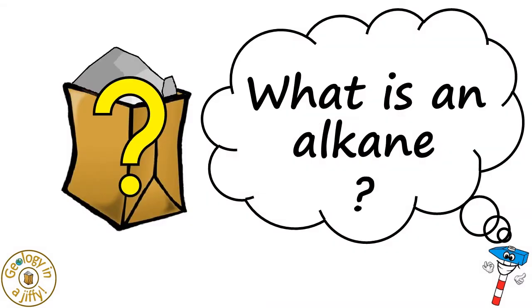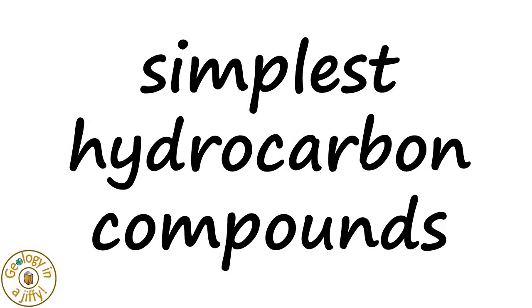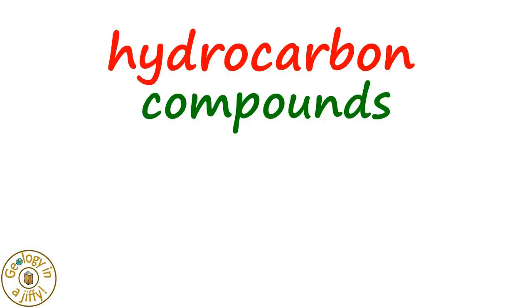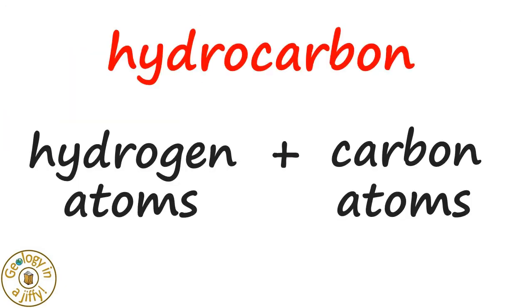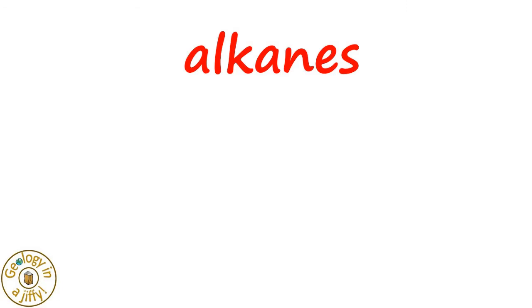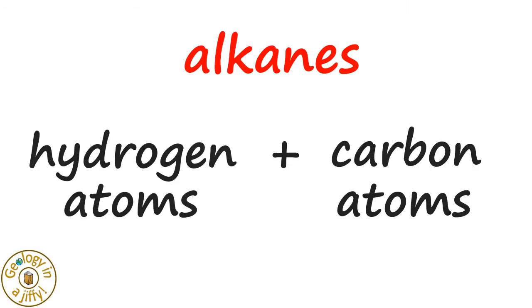What is an alkane? Alkanes are the simplest hydrocarbon compounds and are commonly found in crude oil. Hydrocarbon compounds are made up of hydrogen atoms and carbon atoms. Alkanes are only made of these types of atoms, bonded together.